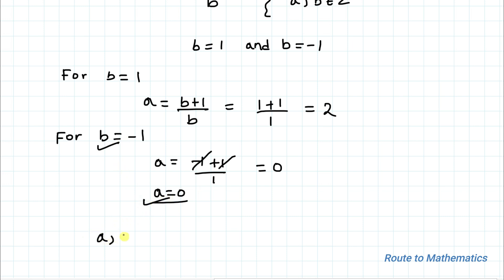So only value of (a,b) we are getting is (2,1) that satisfies the given equation as our answer. I hope you have understood the solution. Thanks for watching. Please subscribe to my channel and click the bell icon for more such interesting videos. Thank you.